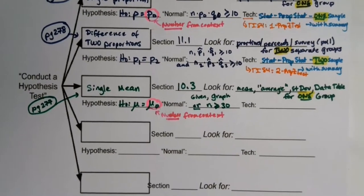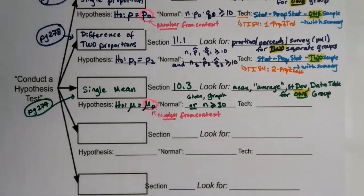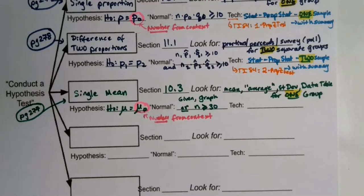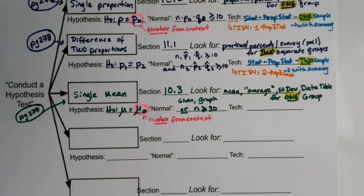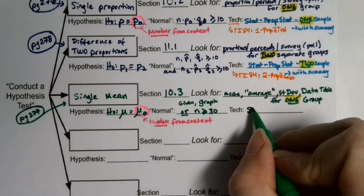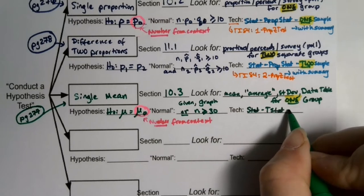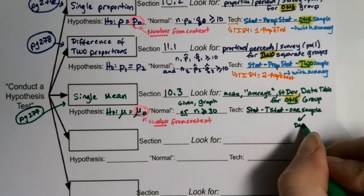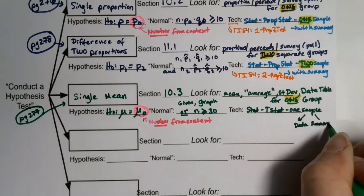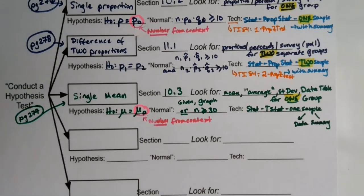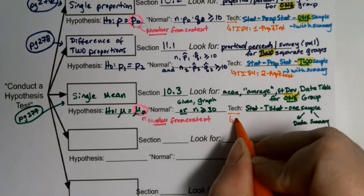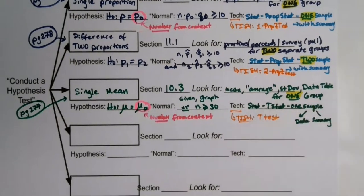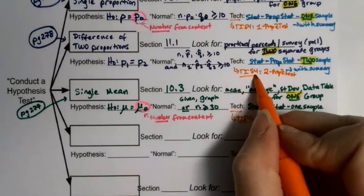For technology on the single mean test, you use Stat > T-Stat > One Sample, then choose 'Data' if you have a data table or 'Summary' if you don't. If you're on a TI-84 it's simply a T-Test. That's pretty straightforward — only write the TI-84 version if you're using one.